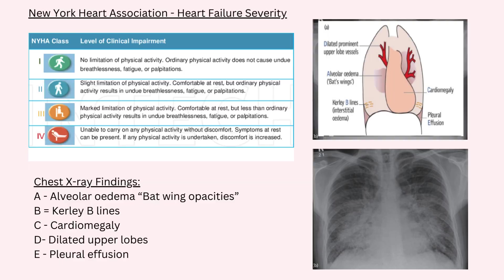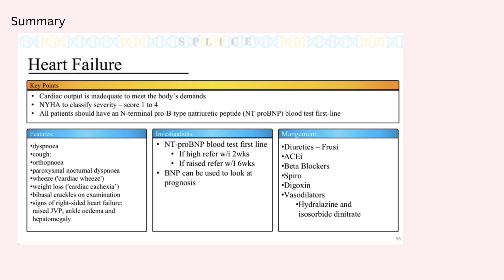Upon chest X-ray of a patient with heart failure, we can remember the findings with the mnemonic ABCDE: A standing for alveolar oedema, which presents as batwing opacities; B for curly B-lines; C for cardiomegaly; D for dilated upper lobes; and E for pleural effusion. These five things on the chest X-ray would suggest heart failure.